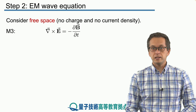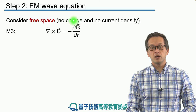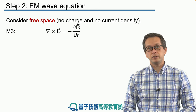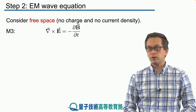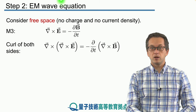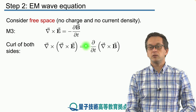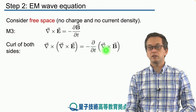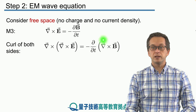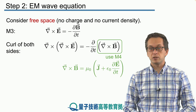Let's start from Maxwell's third equation, which tells us how the curl of the electric field is related to the time derivative of the magnetic field. We would like to express both sides in terms of the electric field. The trick we're going to apply is to take the curl of both sides. On the left hand side we have the curl of the curl of the electric field, and on the right hand side we have the minus time derivative of the curl of the magnetic field. But we know how the curl of the magnetic field is related to the time derivative of the electric field, so let's substitute Maxwell's fourth equation.